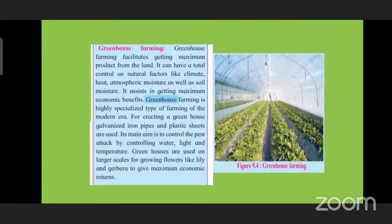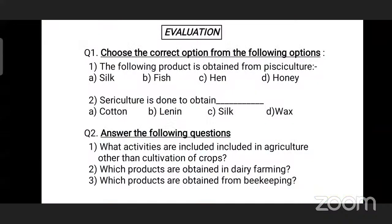In this way we have finished the half part of the lesson. Now I will take your evaluation. Question number 1: choose the correct option. The following product is obtained from pisciculture — silk, fish, hen, or honey? Fish. Yes, very good. Second question: sericulture is done to obtain — A. cotton, B. linen, C. silk, D. wax? Silk. Yes, very good.